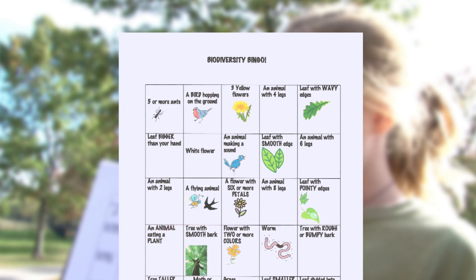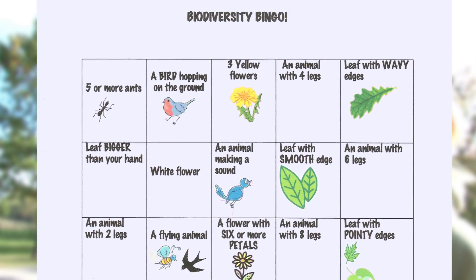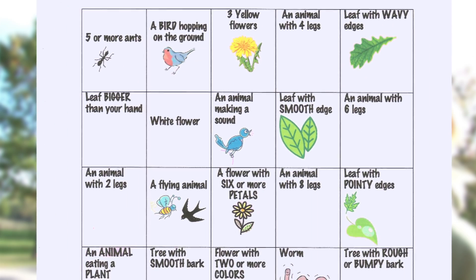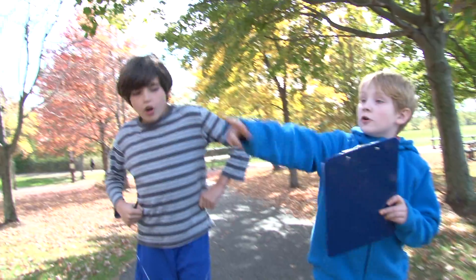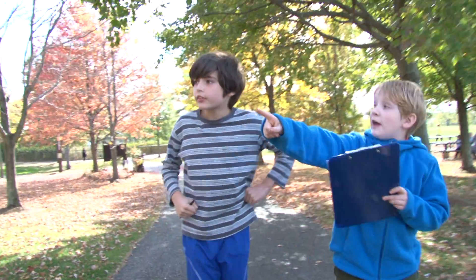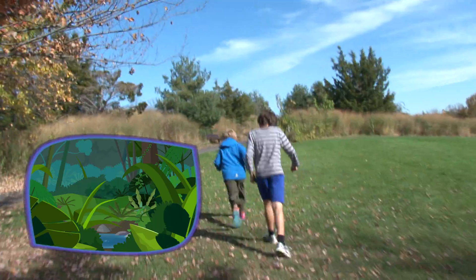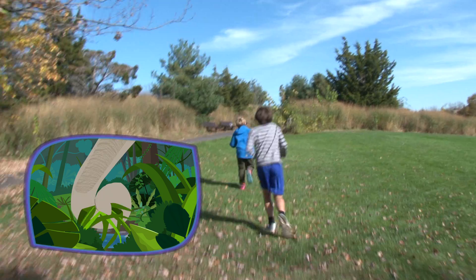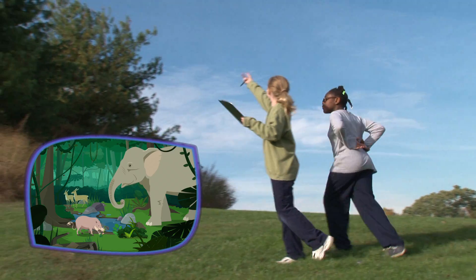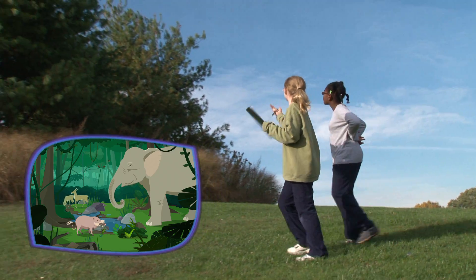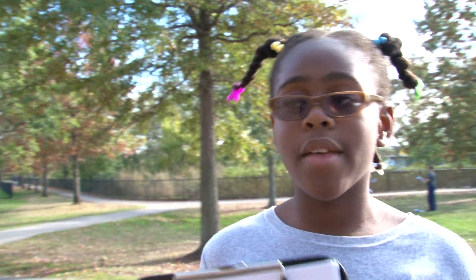This is our bingo card. These are all things that you can find in nature, so we have to find five of these in a row and then we win the game. Look over there — yellow flowers! Plum sent the kids to the jungle to explore biodiversity, but you don't have to go to some far-away world. You can explore your own world to play this game.